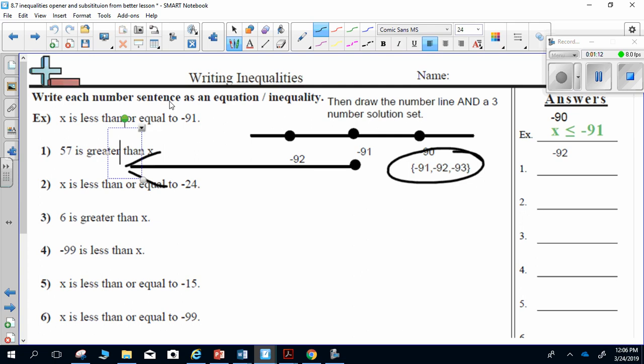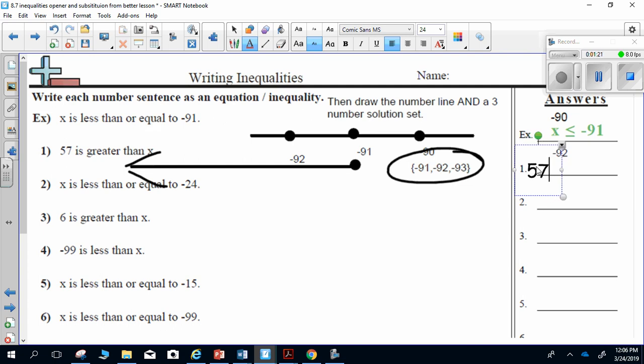Let's look at the next one. We'll do this one with you, and then you're on your own. So for the next one, it says that 57 is greater than x.